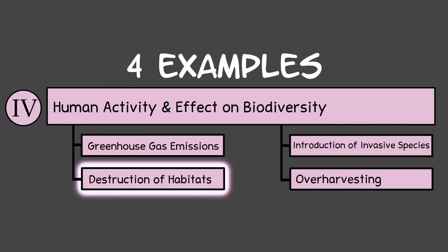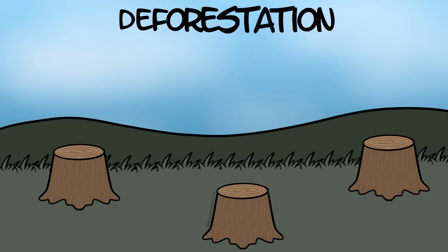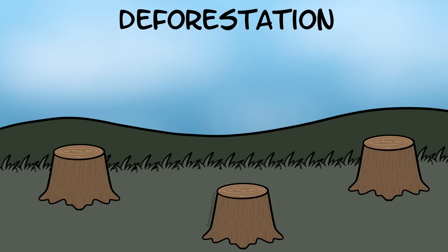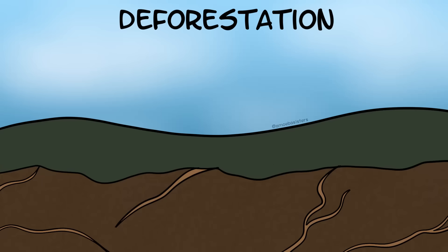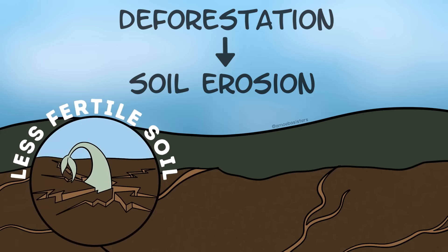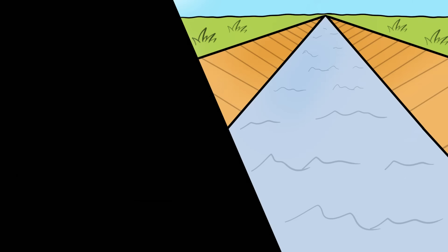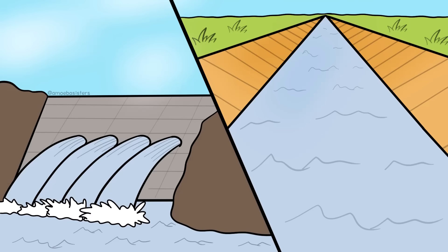Example two: destruction of habitats. Deforestation is an example, as it can affect the habitat of organisms that consider the forest home. After forests are cleared, soil erosion can occur, resulting in less fertile soil, and runoff can affect nearby bodies of water and the organisms within. If sustainable practices are not used in land development, rerouting water flow or adding dams can also affect aquatic animal habitats.